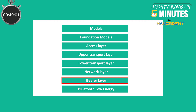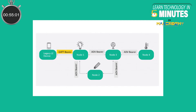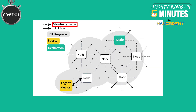Bearer Layer: The Bearer Layer defines how the different mesh packets are handled. There are two types of bearers in BLE Mesh. The first is the Advertising Bearer, which utilizes the advertising and scanning states of the BLE devices.